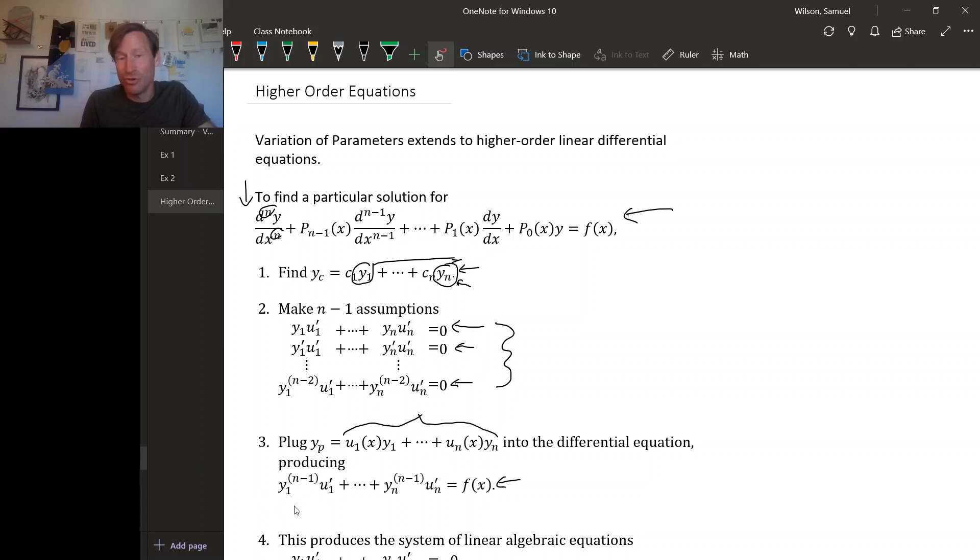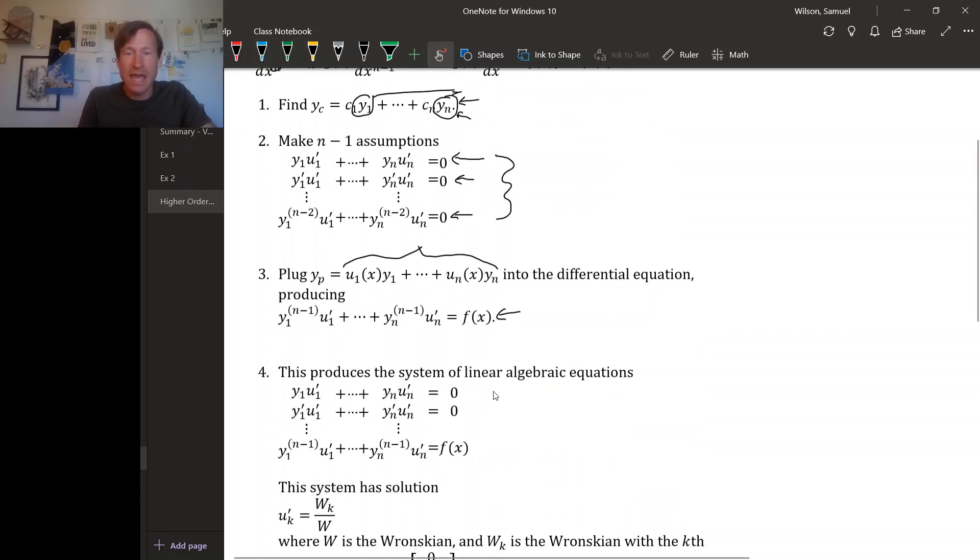Again, if n is 2, this is exactly the equation we got from the order 2 case when we worked out variation of parameters. All right, putting this all together gives you a system of n algebraic equations and n unknown functions, the u sub whatever primes.